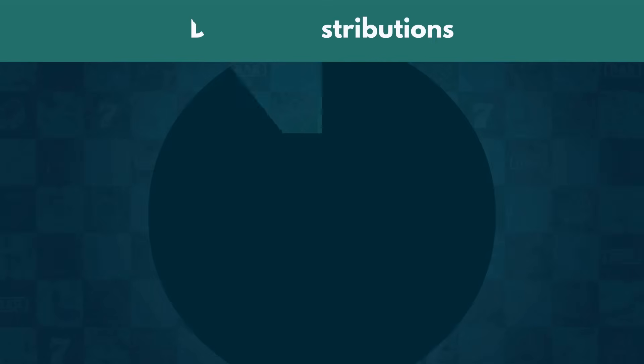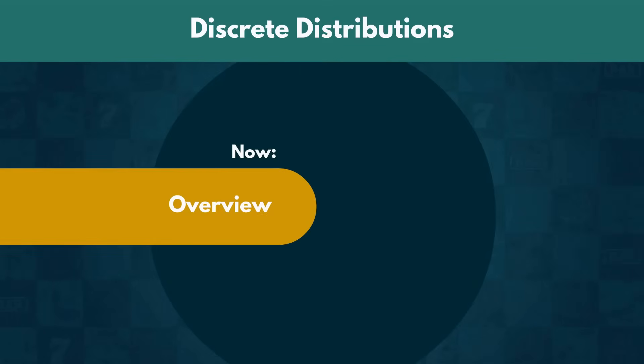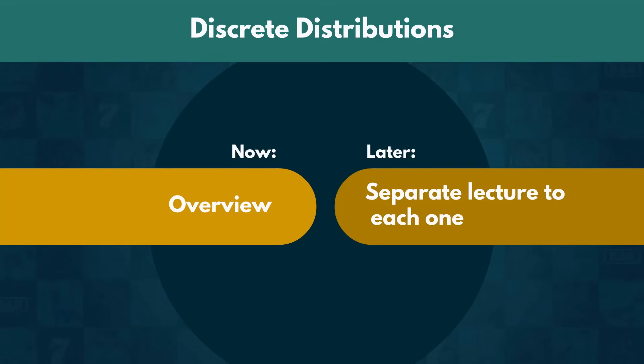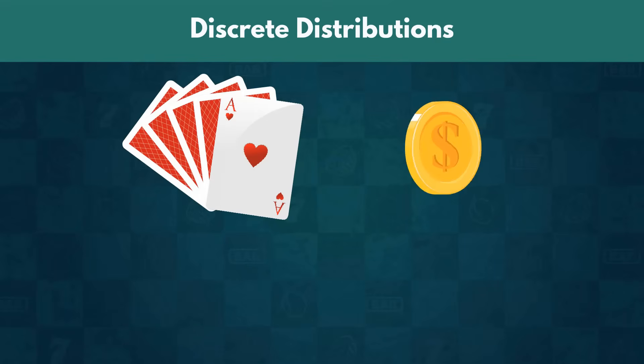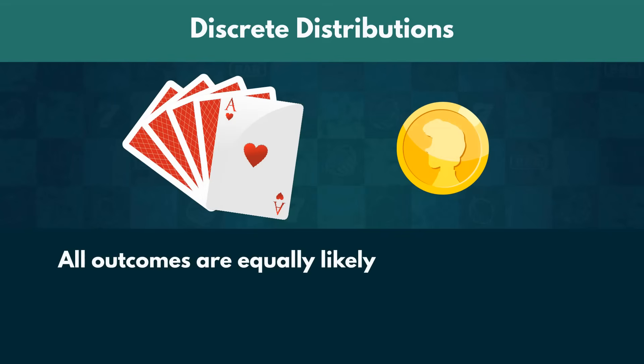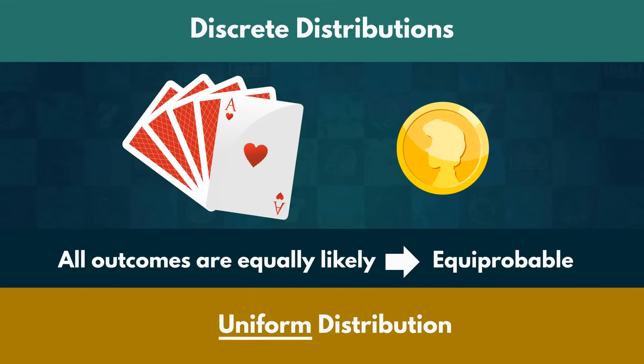Alright. Let us start by talking about the discrete ones. We will give an overview of them, and then we will devote a separate lecture to each one. So, we looked at problems relating to drawing cards from a deck or flipping a coin. Both examples show events where all outcomes are equally likely. Such outcomes are called equiprobable, and these sorts of events follow a uniform distribution.